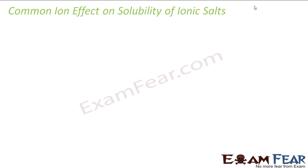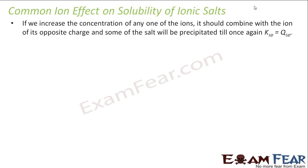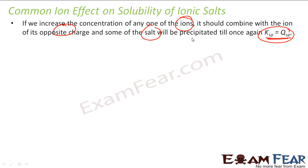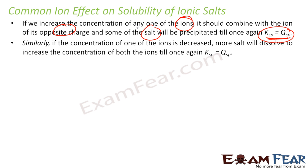Now we'll understand the common ion effect on solubility of ionic solids. If we increase the concentration of one ion, that ion will combine with the ion of opposite charge and the salt will be precipitated until Ksp equals Qsp and equilibrium is re-established. Similarly, if you decrease an ion's concentration, more salt will be dissolved.